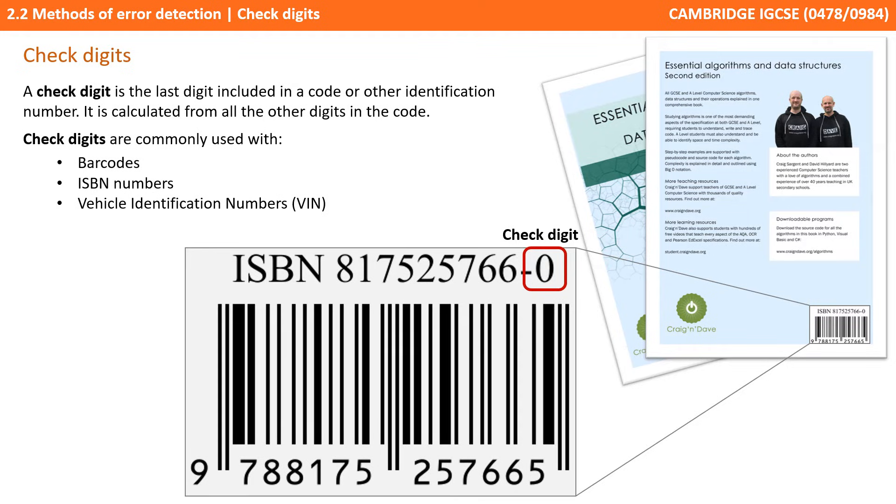A check digit is the last digit included in a code or some other type of identification number and we calculate it from all the preceding digits in the code. It's commonly used in barcodes, ISBN numbers and vehicle identification numbers.